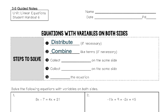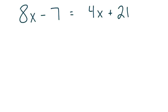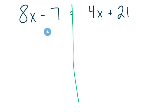If we look back at our equation and draw a line on the equals separating the equation, I look at the left side — there's nothing I can distribute, there's nothing I can combine. These are not like terms. Same thing with the right side — there's nothing I can distribute, nothing I can combine. So those first two steps are just checking your equation to see if there's anything you can do right off the bat.